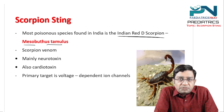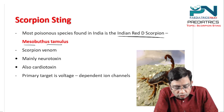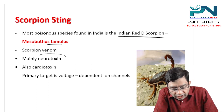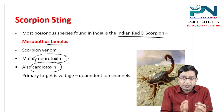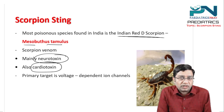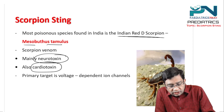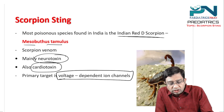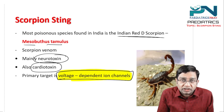This scorpion toxin is majorly two things: neurotoxin as well as cardiotoxin. What happens in the scorpion venom is that it affects the voltage-dependent ion channels. So there is some damage which is seen to the voltage-dependent ion channels.